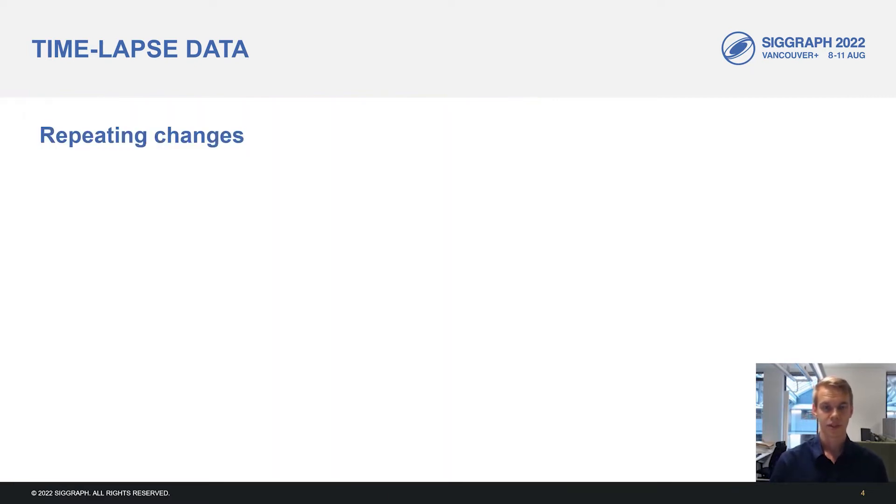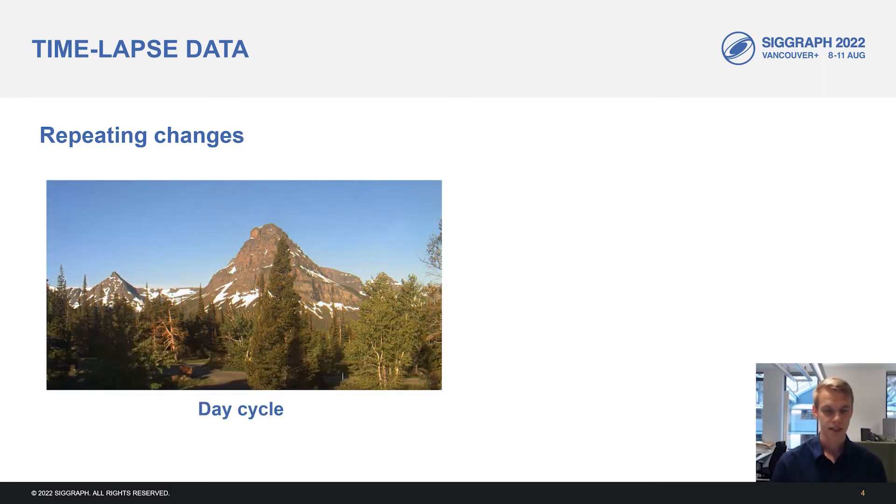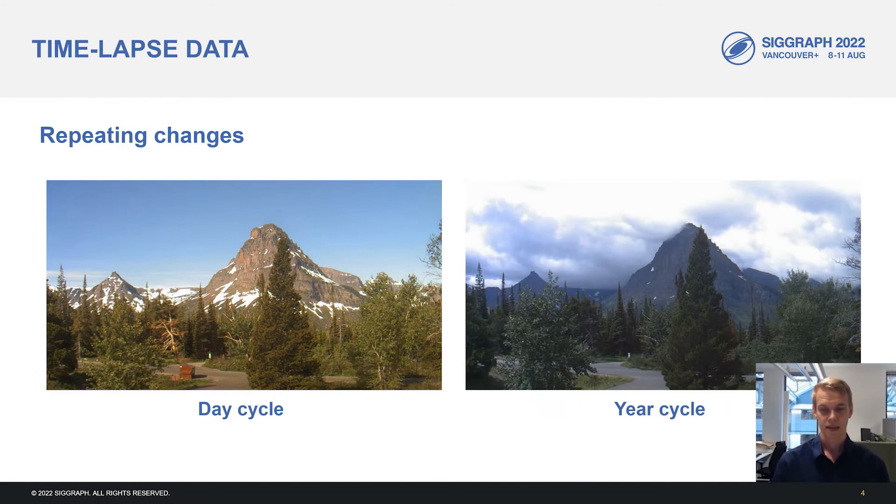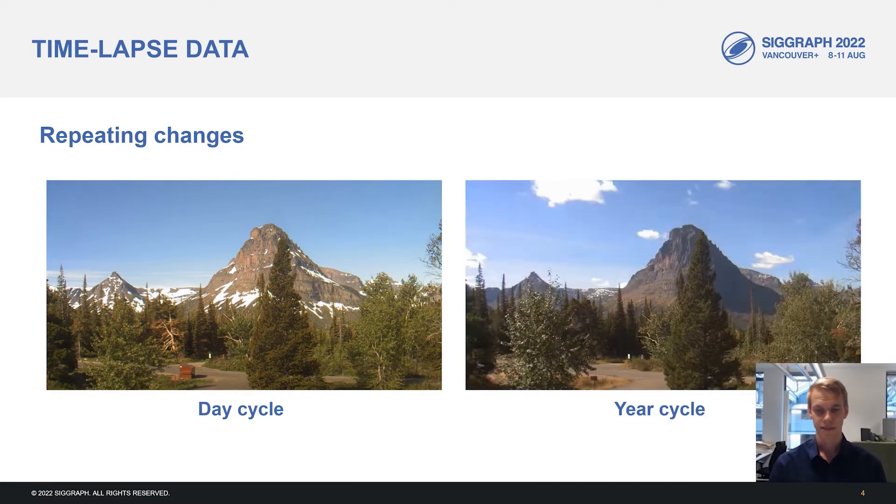Let's enumerate the kinds of changes we expect to see in our data. First, we have repeating changes such as the day cycle where the sun moves in the sky and the year cycle where the seasons keep changing over time.